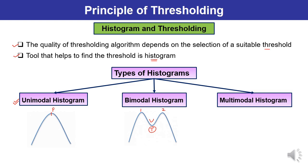The third type is the multimodal histogram. From the name itself, it must be clear that a multimodal histogram has many peaks — multiple peaks. As you can see, there are three or more peaks. So this is how the types of histograms exist and can be visualized depending upon the peaks. There are various techniques which can be followed for selecting the threshold value. In some cases, random selection of threshold values can be done; in some cases, a region of interest is identified and accordingly the threshold value is selected.